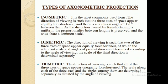Axonometric projection is divided into three types: isometric, diametric, and trimetric. In isometric projection, the direction of viewing is such that the three axes of space appear equally foreshortened, with a common angle of 120 degrees between them. In diametric projection, two of the three axes appear equally foreshortened, and the scale and angle of presentation are determined according to the angle of viewing.